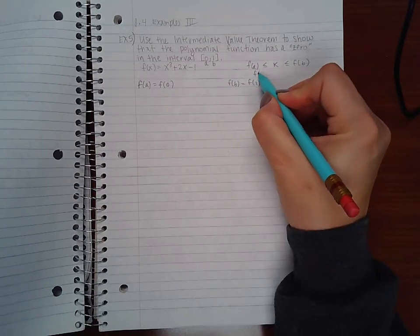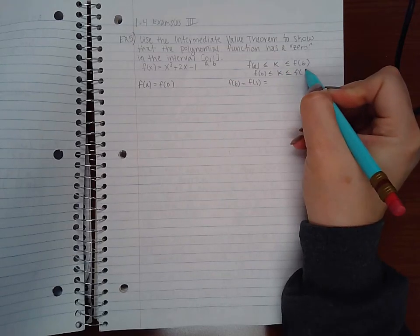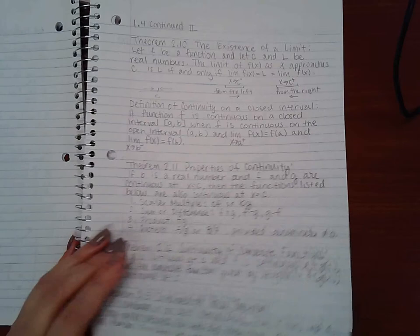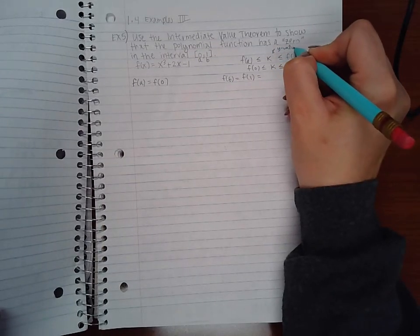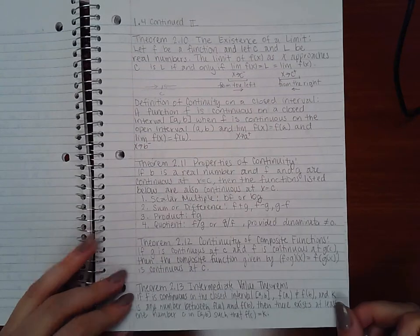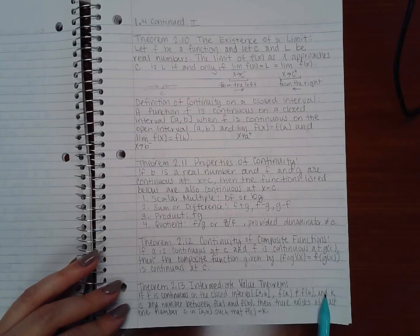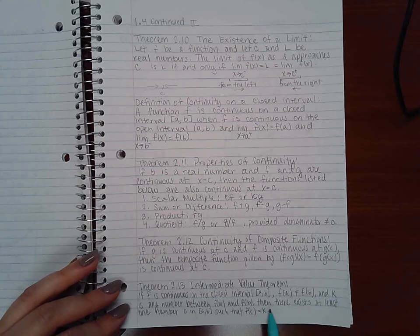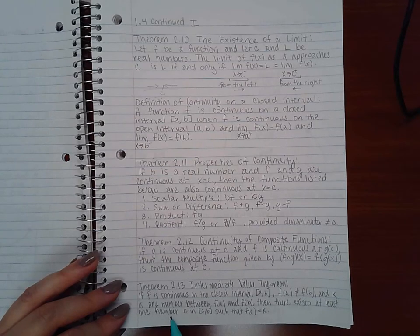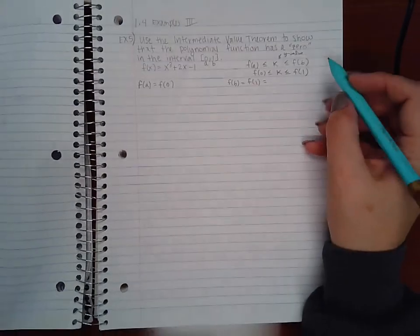So we have to show that k is between f(a) and f(b), like this. In my case it would be f(0), some k value, and f(1). Remember k is a y value, so we'll talk about that y value and what it is in a minute. Then it says that if that k is between these two numbers and if these two numbers don't equal, then there exists at least one number c in the interval such that f(c) equals k.